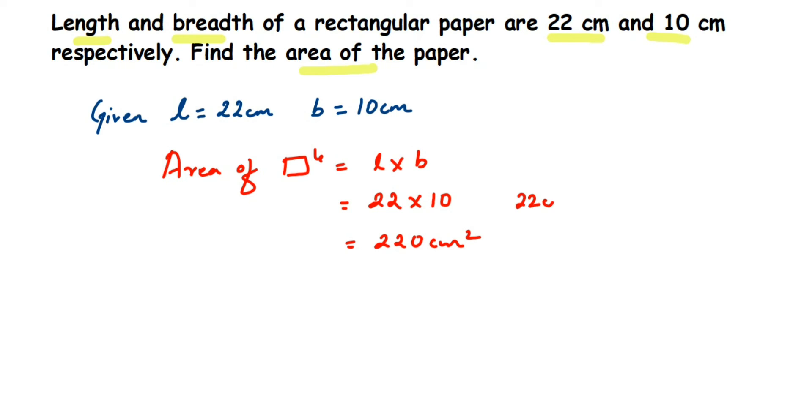And the units will be centimeter square. How we call it centimeter square? You're multiplying here 22 centimeter and 10 centimeter. So when you multiply 22 and 10 you will get 220. When you multiply centimeter and centimeter you get centimeter square, so unit will be centimeter square.